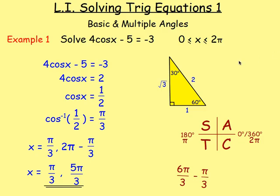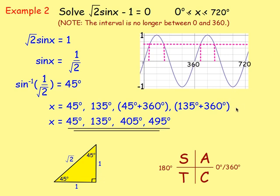We then moved on to solving trig equations in more detail, looking at a basic example using radians for the first time. The next example involved changing the interval — instead of 0 to 360, it was 0 to 720. So we had to add 360 on to both answers that we found. You can see why, because the wave is just repeated.